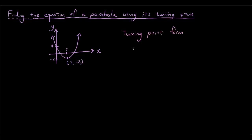The turning point form is y equals a bracket x minus b squared plus c, where b and c make up the coordinate of the turning point.